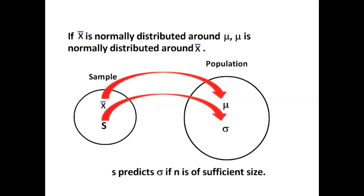You would use x-bar to predict mu, but you must use s to predict sigma. And s is a good predictor of sigma if n is of sufficient size. But if the samples are very small, then s is not a good predictor of sigma and you have to compensate.